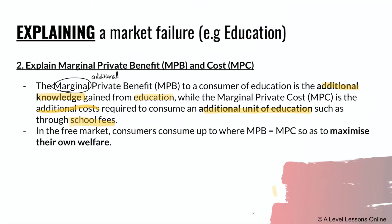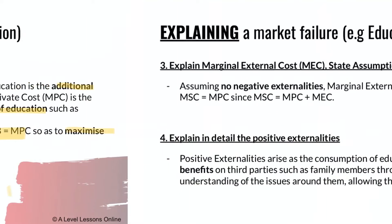In the free market, consumers consume where MPB equals MPC so as to maximize their own welfare. This means the additional benefit from one additional unit of a good equals the additional cost of that unit. When additional benefit matches additional cost, consumers feel satisfied — they maximize their own welfare.